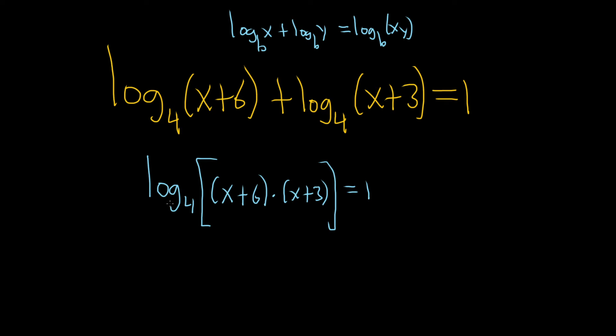Now we need to get rid of this log. So what we can do is we can exponentiate. Basically, we're going to put a 4 here. We're going to put a 4 here. And when you do that, what happens is these cancel. And so you're left with x plus 6, x plus 3. And here's a 1, so it'll be 4 to the 1, which is 4.